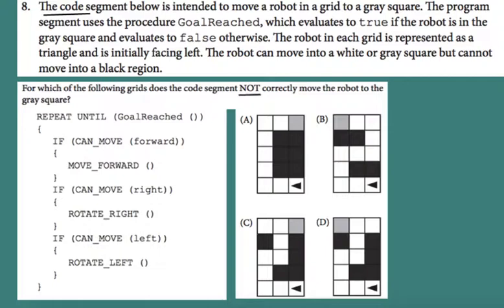Let's look at the algorithm. Repeat until goal reached: if can move forward, move forward. If can move right, rotate right. If can move left, rotate left. The order of commands is important. The robot first moves forward if it can, then tries to turn right, then tries to turn left, and then repeats from the beginning.